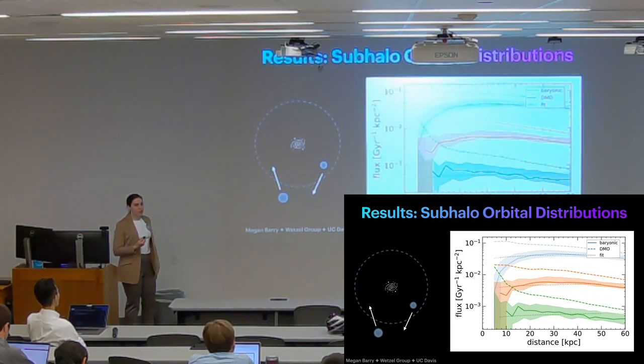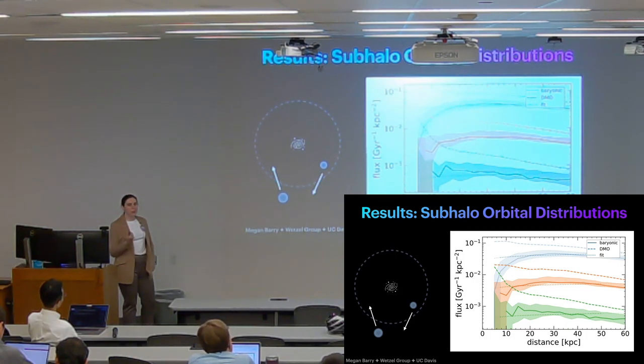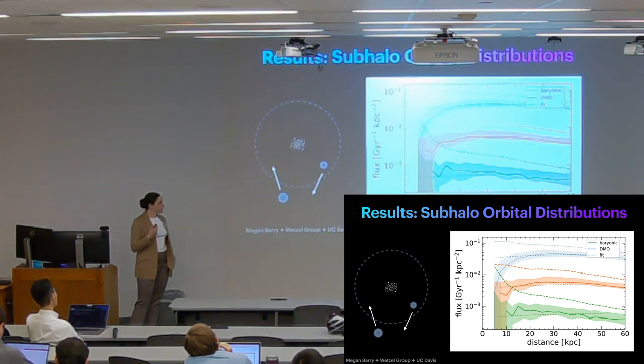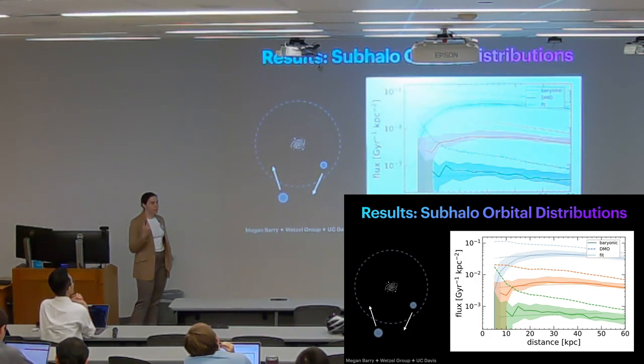So again, you can see not a ton but not none. But you can imagine using this metric to be able to calculate an interaction rate between these subhalos and some given stellar stream. And I'll also point out here that for all these population metrics we generated some curve fits to this data. So if you'd like, you can plug in your own mass range, distance, and redshift to see how many subhalos we would expect to be there, including population number density and flux rates.